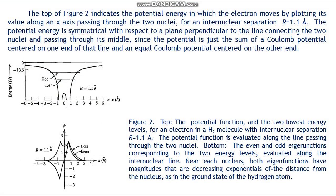The situation is shown in the bottom of figure 2 by plotting the lowest-energy even and odd normalized eigenfunctions along a line passing through the two nuclei. The important idea is that the odd eigenfunction must necessarily have zero value at the center of this line, since it obeys the equation ψ(−x) = −ψ(x), which is always internally inconsistent at the center where x = 0. But the even eigenfunction is not so constrained and thus has an appreciable value at x = 0.